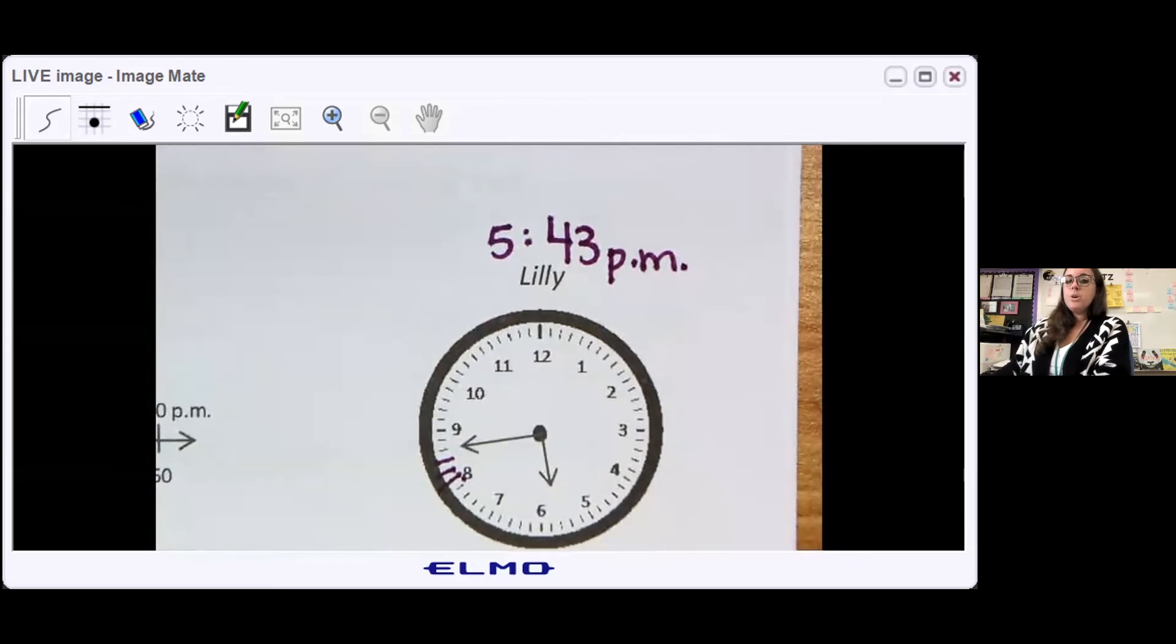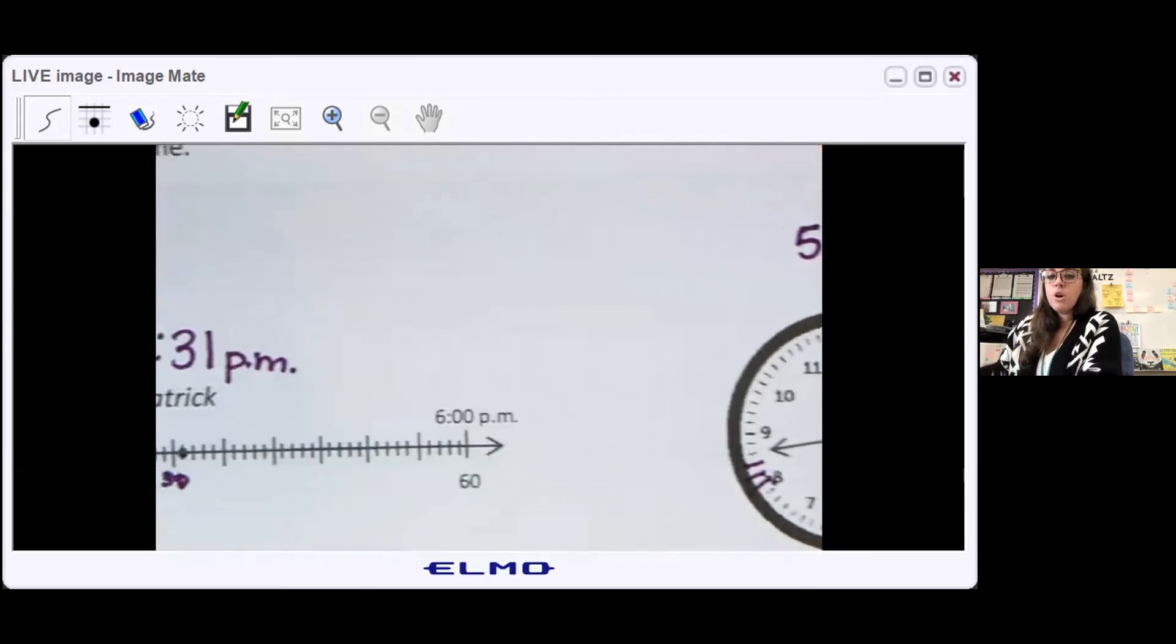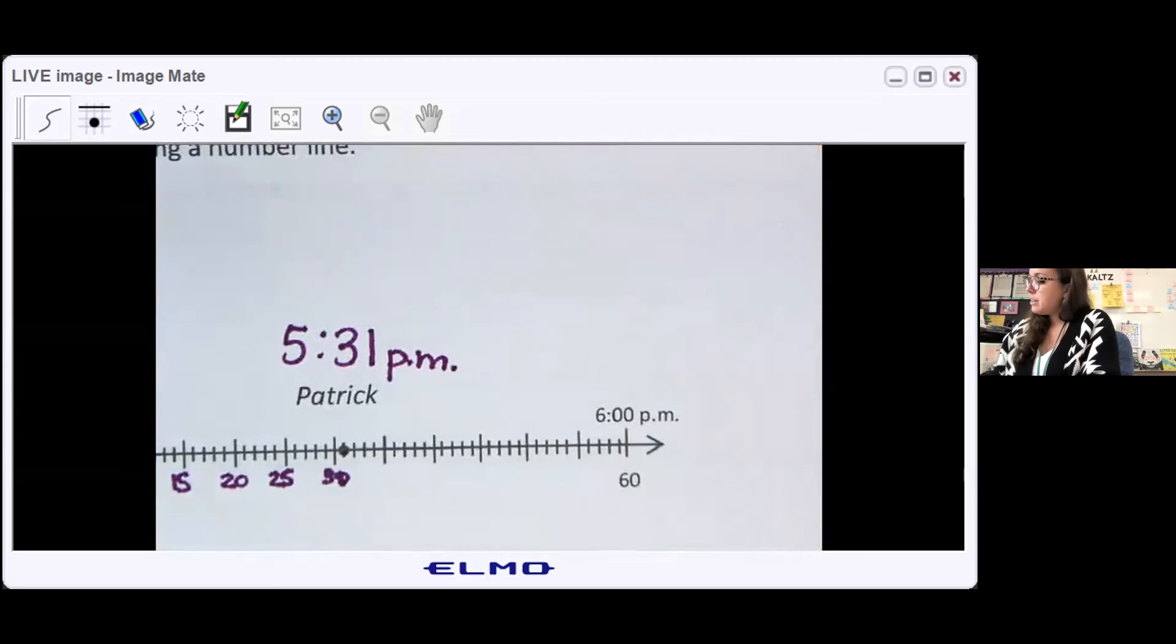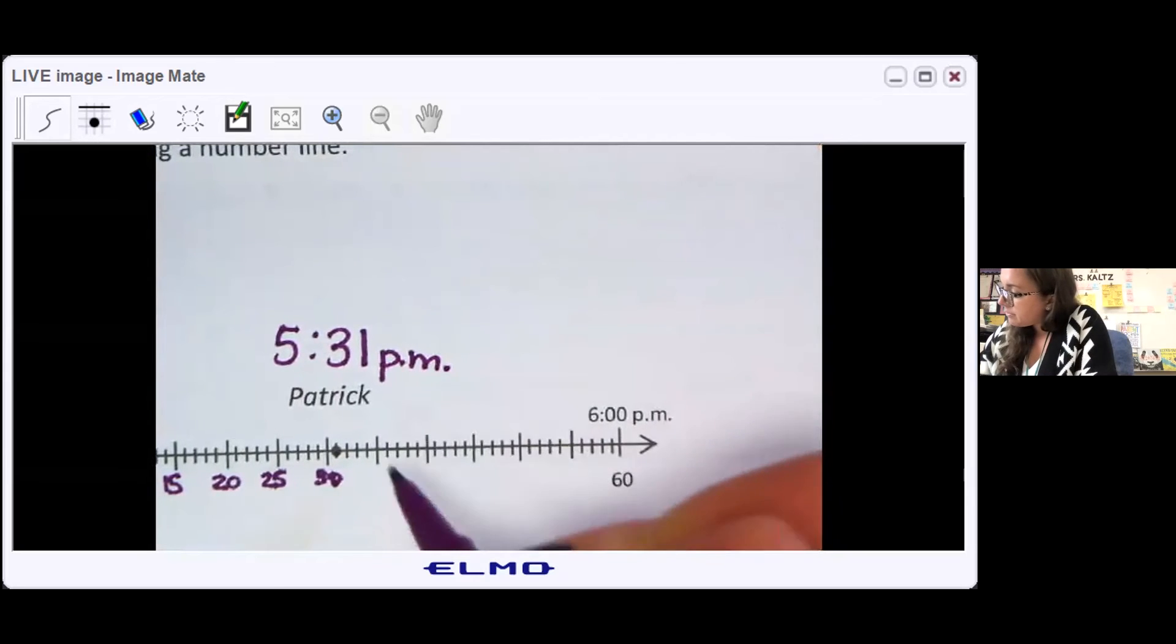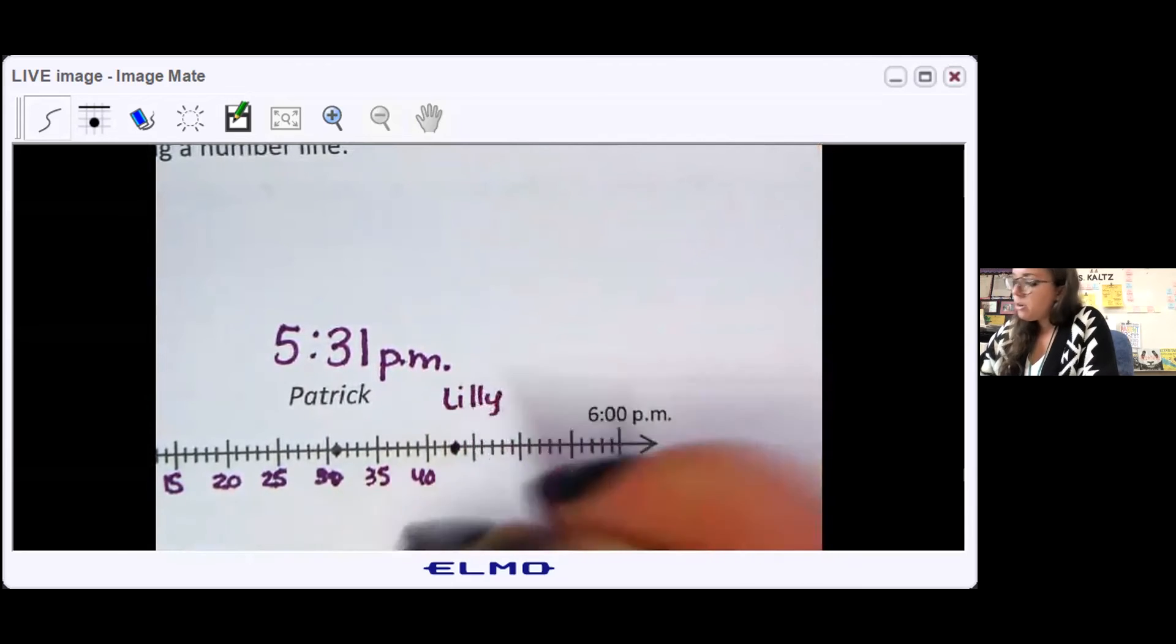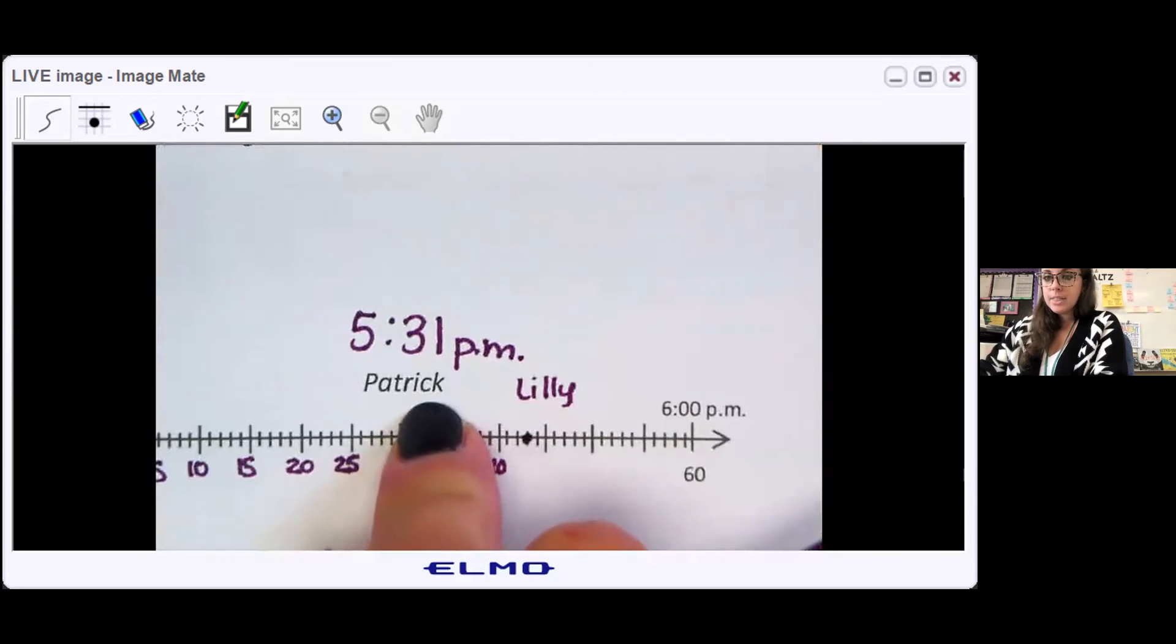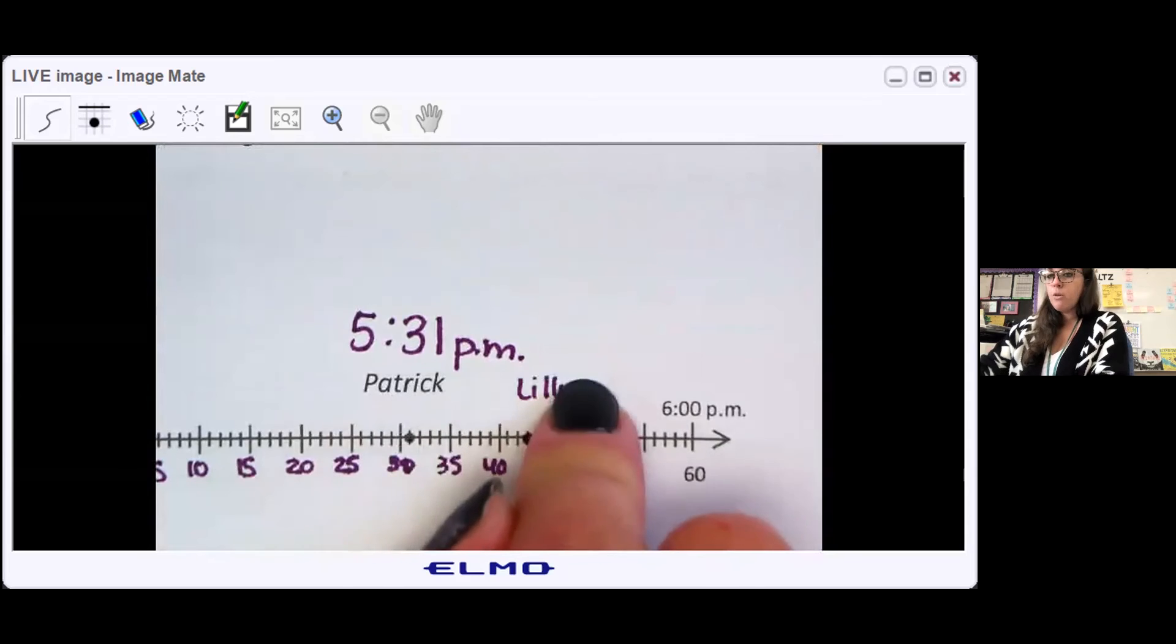So I wanna know who finished first, Patrick or Lily. If I go back to the number line, I could put Lily's time here. This is 35, 40, 41, 42, 43. That's Lily. I know Patrick finished first because he's first on the number line. So Patrick finished before Lily.